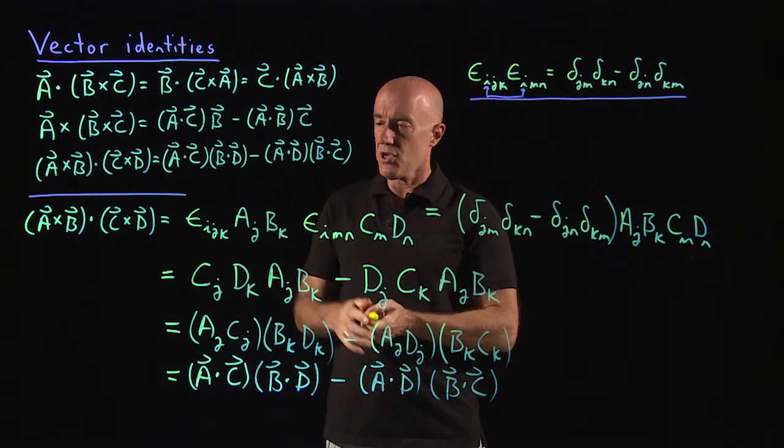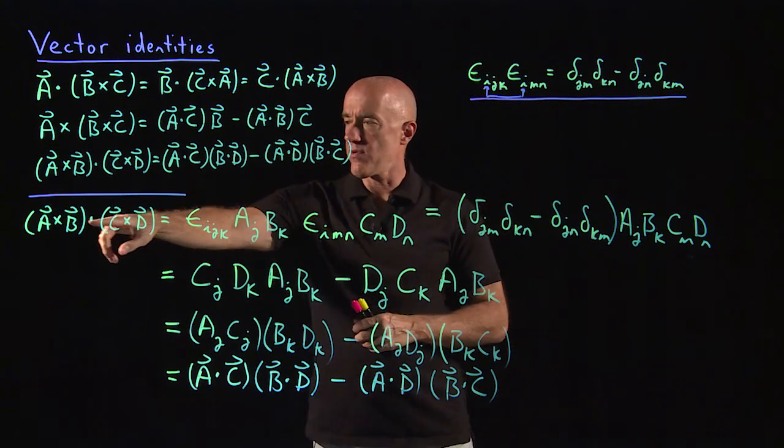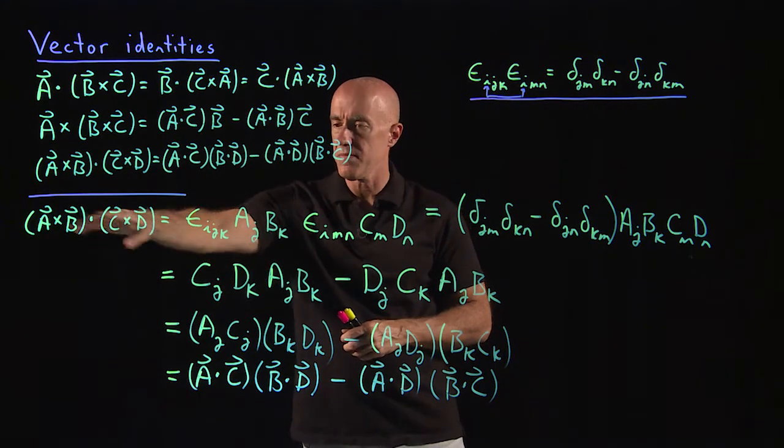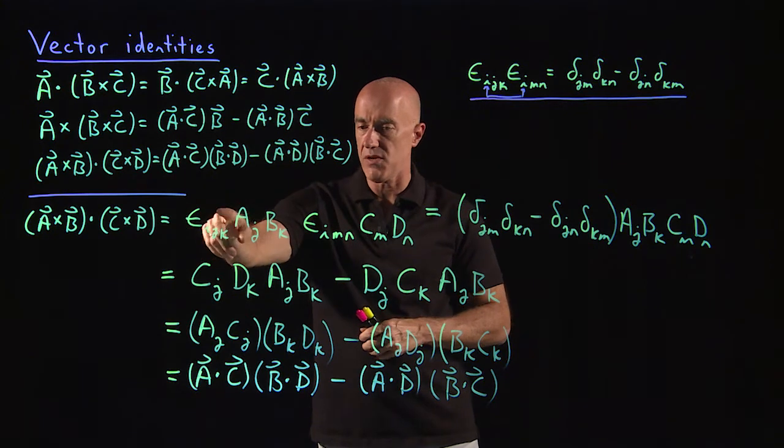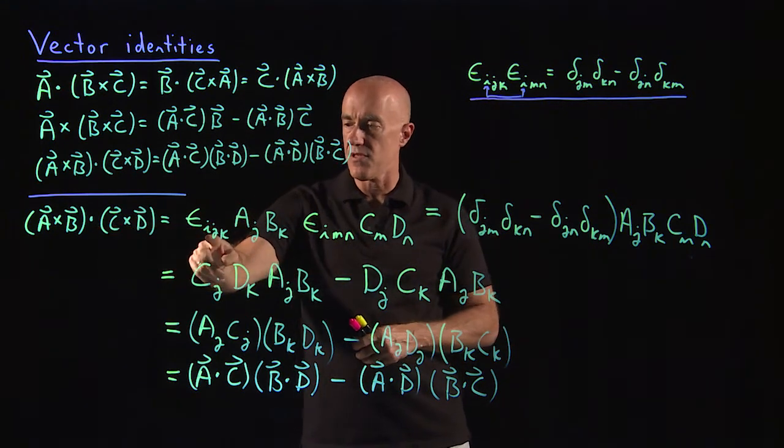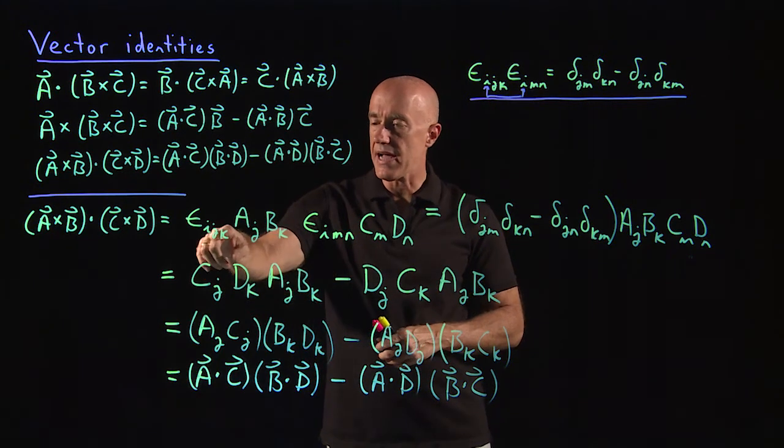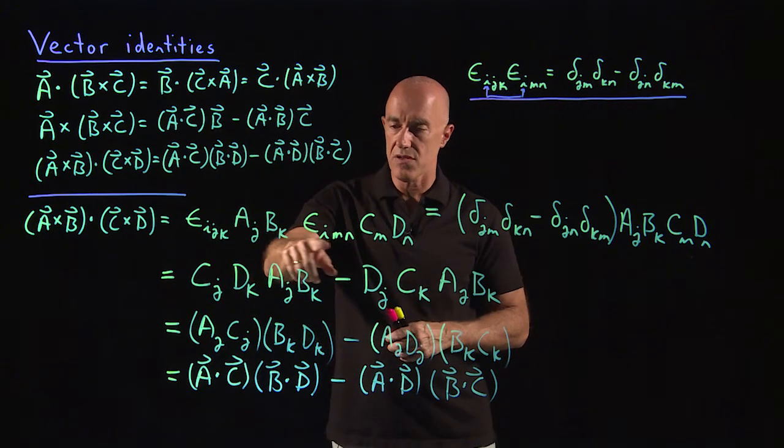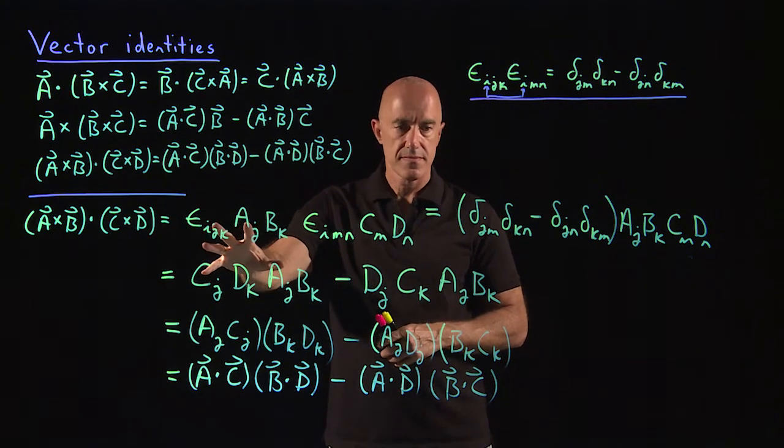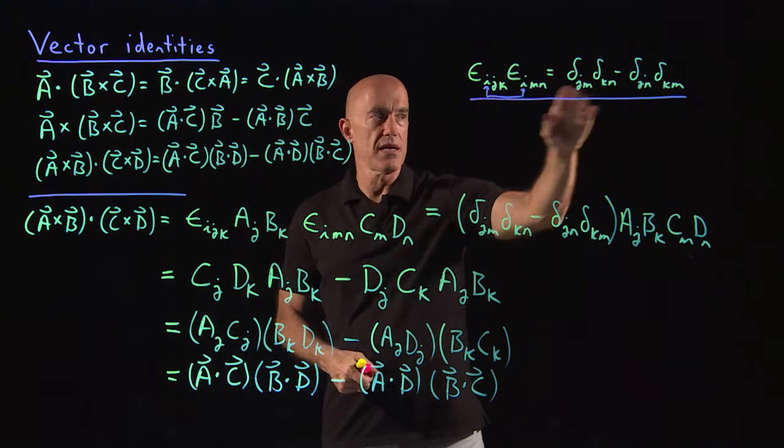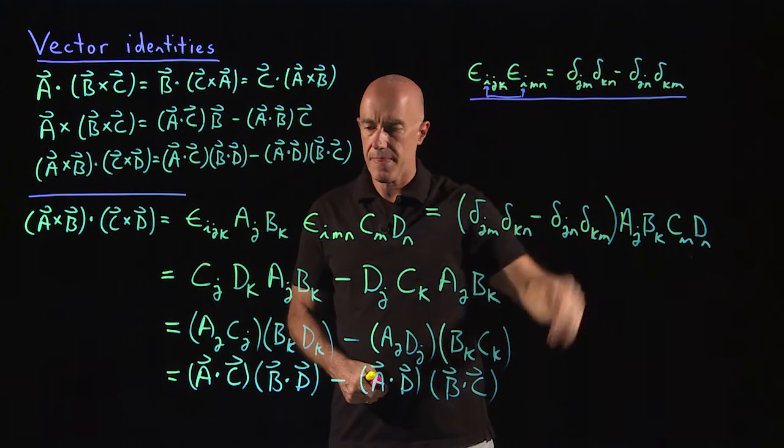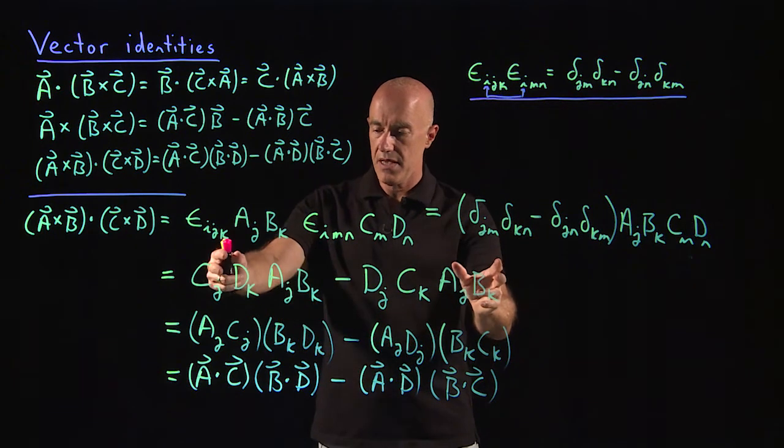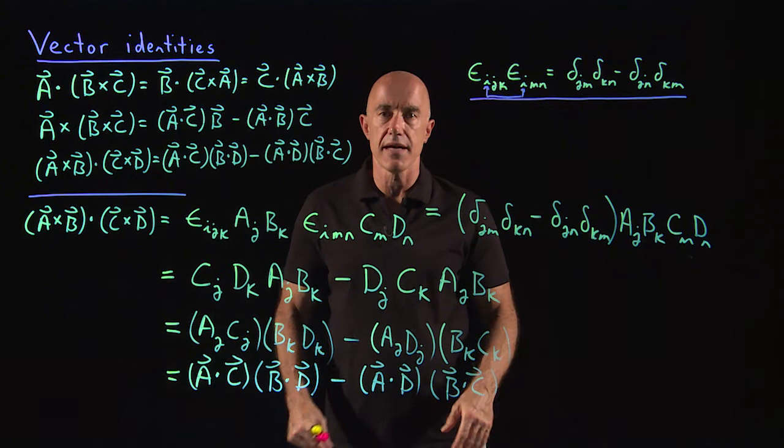So let me just quickly go through the steps here again. We replace the cross product using the Levi-Civita symbol. We replace the one A×B, we replace the one C×D. It's a dot product, so the first index is repeated. You cannot use the same index twice, unless you're summing over it. So we have to have a different index on this cross product. Now we can combine these two epsilons using our identity here. And then we can contract the Kronecker deltas against the components, and group them, and see that we get the dot product.